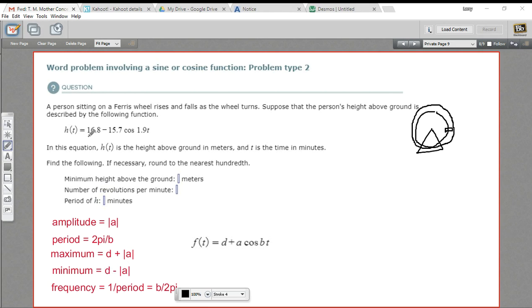In our case, d here is 16.8, so 16.8 minus the amplitude. And the amplitude is the absolute value of this number. Absolute value of -15.7 is 15.7. So we're going to subtract 15.7.